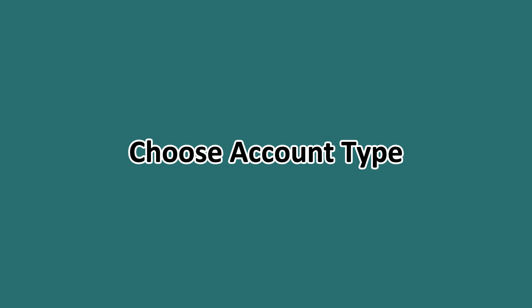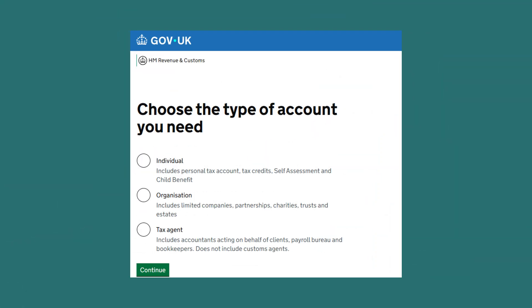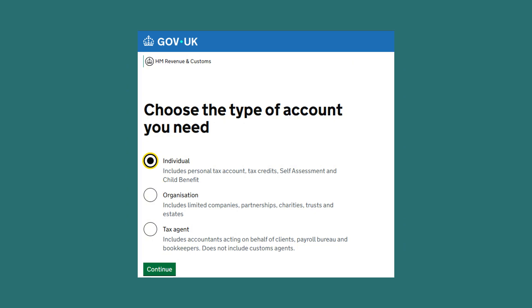The next step is to choose your account type. You'll be asked to select the type of account you need. For personal tax affairs, choose individual. Other options include organization, for businesses, and tax agent.